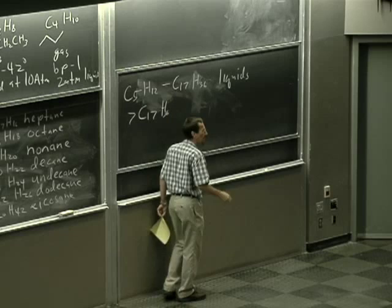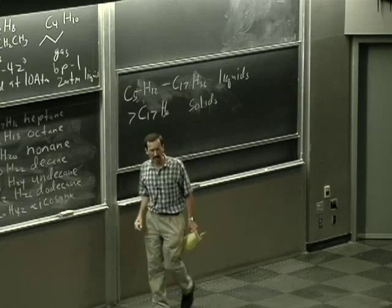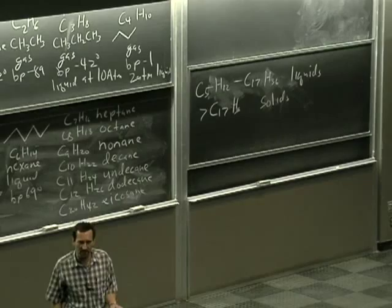Up above C17, they're solids, they're kind of waxy solids. In fact, if you push your finger against them, they're soft. It's not a surprise. Paraffin wax is a mixture of high chain length, long chain length alkanes. And in fact, all of the alkanes are known as the paraffins. That's the family of compounds to which they belong.